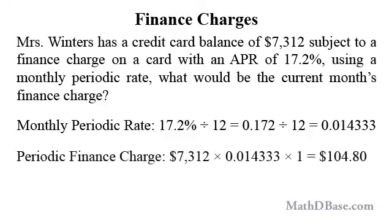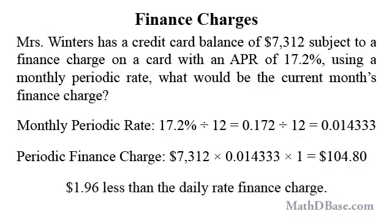In this case, her periodic finance charge would be $7,312 times 0.014333 times 1, since the time period is 1 month, which works out to $104.80, rounded to the nearest penny — which is $1.96 less than her finance charge calculated using the daily rate.